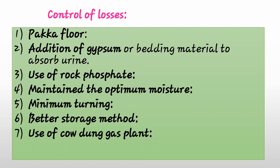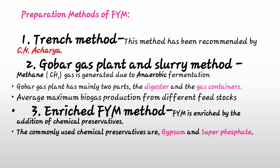For important objectives on FYM manures: there are three methods of FYM preparation — the Strawy method (recommended by C.N. Acharya), the Gobar gas plant slurry method, and the enriched FYM method. In the Gobar gas plant method, methane gas is generated by anaerobic fermentation, and the plant has two main parts: digester and gas container. Average maximum biogas production from different feedstocks was also discussed in the chart.